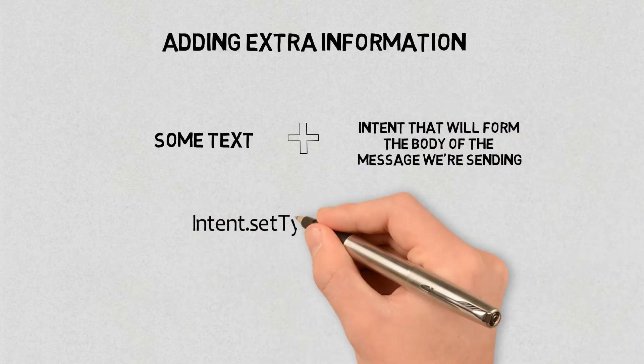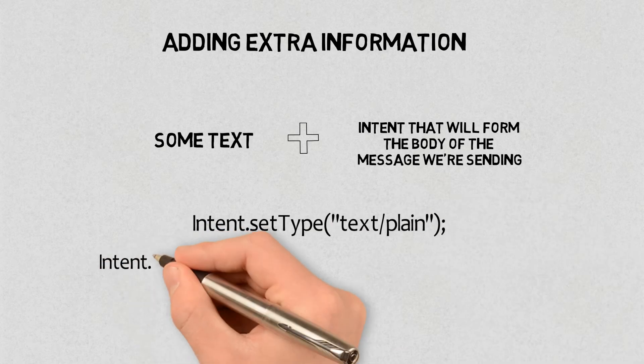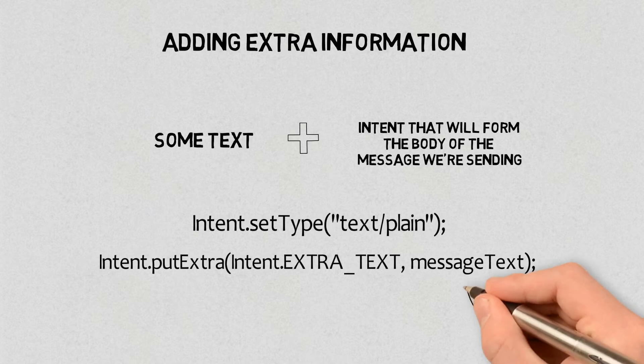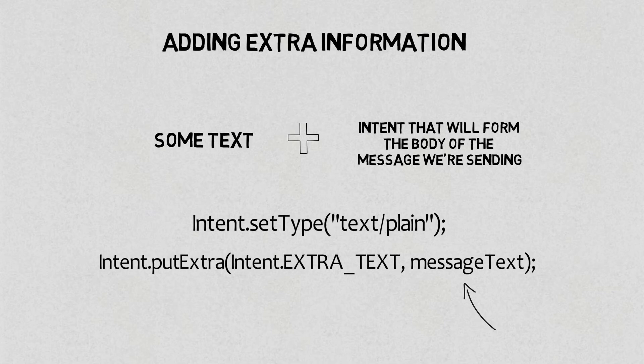Intent.setType, Intent.putExtra, Intent.EXTRA, where message text is the text you want to send. This tells Android that you want the activity to be able to handle data with the MIME data type of text/plain and also tells it what the text is.